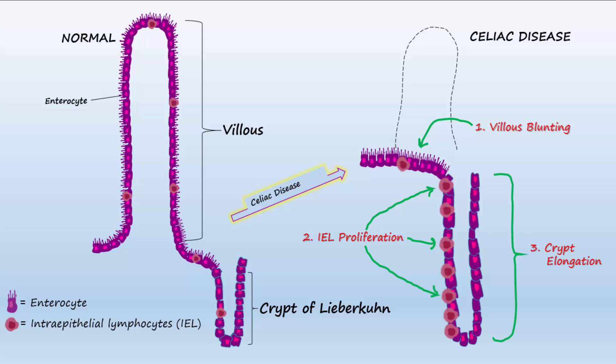Please remember these three morphological changes seen in celiac disease: one, villus blunting; two, IEL proliferation; and three, crypt elongation.